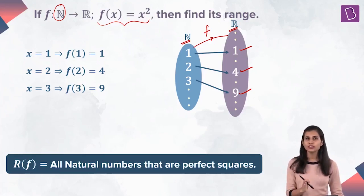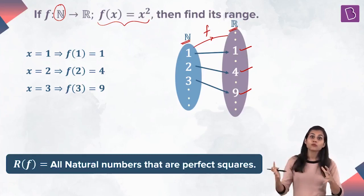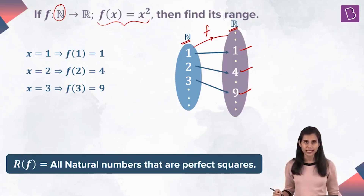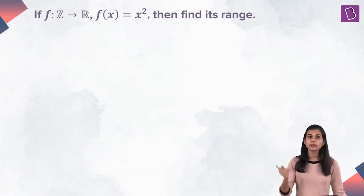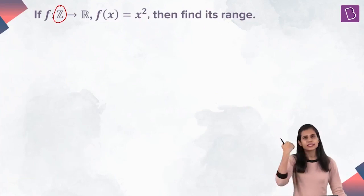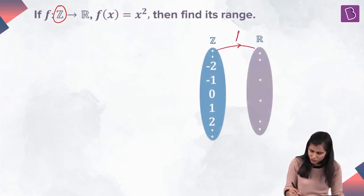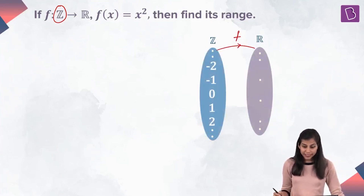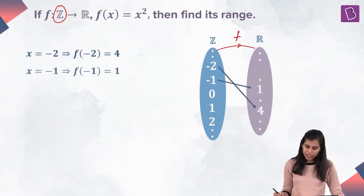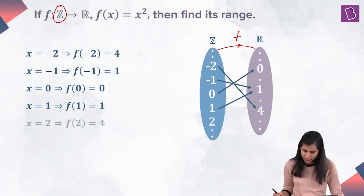When the inputs are natural numbers, the outputs are those natural numbers which are perfect squares. Now I want to find the range of the same function but corresponding to the set of all integers being the domain, which is again a discrete set. So let's use the arrow diagram approach again. I have my domain and co-domain ready — f is a function from Z to R. (−2)² = 4, so −2 gets mapped to 4. (−1)² = 1, so −1 gets mapped to 1. 0² = 0, so 0 gets mapped to 0. 1 gets mapped to 1, and 2 gets mapped to 4, and so on.